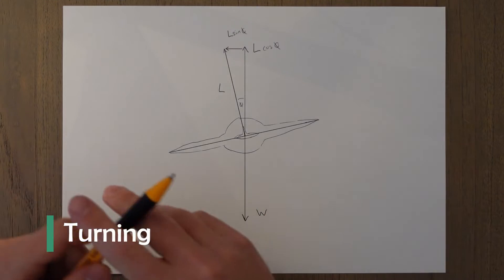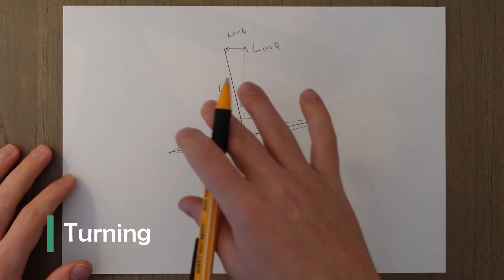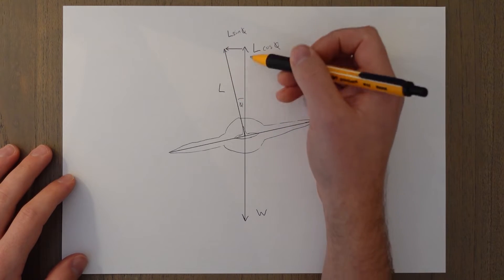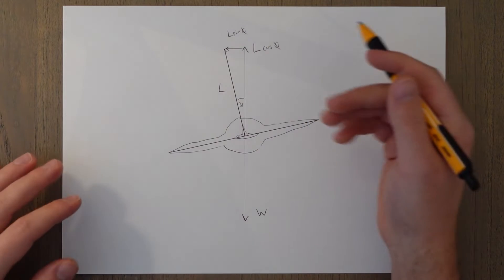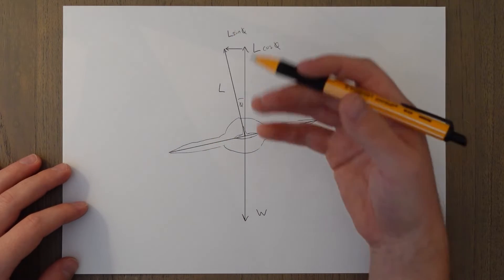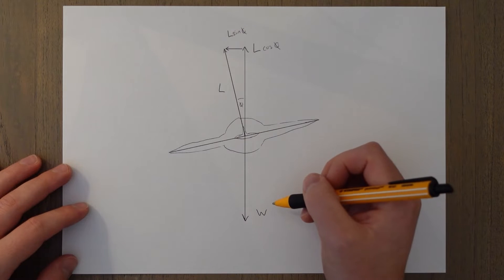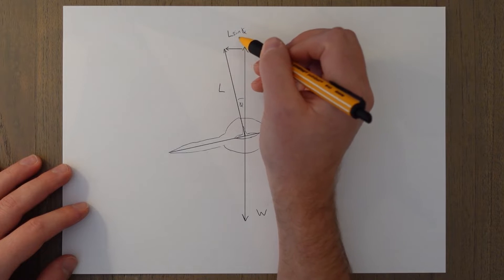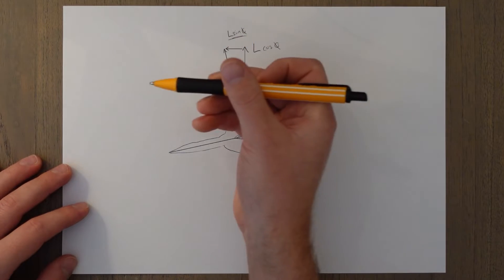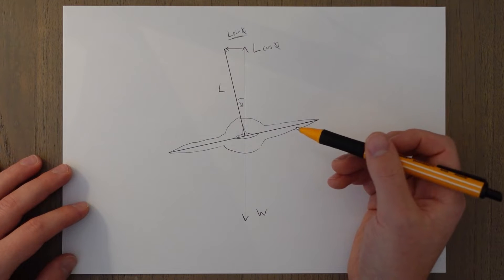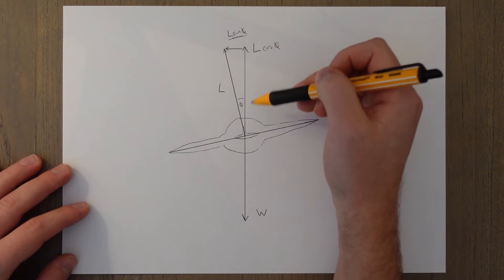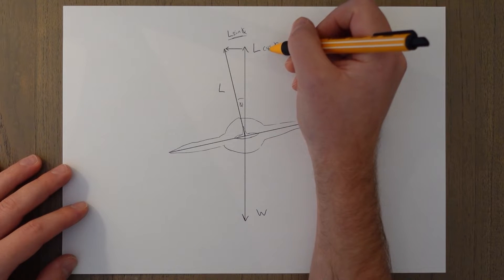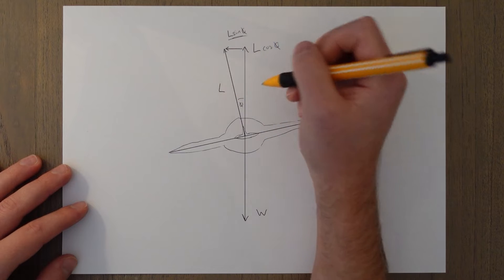When we turn in an aircraft, we bank or roll the aircraft into the turn. This means that the lift now acts at an angle to the normal vertical plane — not too dissimilar to the slope of the aircraft in the previous examples. In turning though, we only need to consider two forces: lift and weight. When we bank the aircraft over, we're using a component of this lift force to pull us into the turn and rotate the aircraft around. We can break the lift down into vertical and horizontal components.